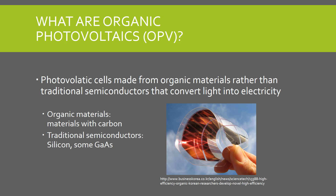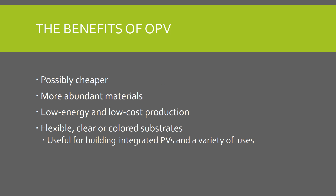OPV cells are a type of photovoltaic that use organic materials instead of traditional semiconductors. Organic materials are materials with carbon, while semiconductors are group 3, 4, and 5 elements. Organic cells have numerous benefits. They have the potential to be very cheap for two main reasons: the raw materials are abundant, and the production of OPV cells is less energy-intensive and less costly than their inorganic counterparts.